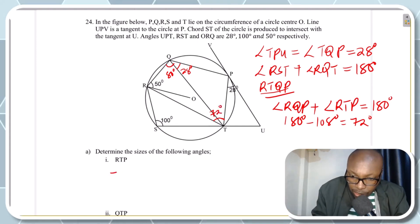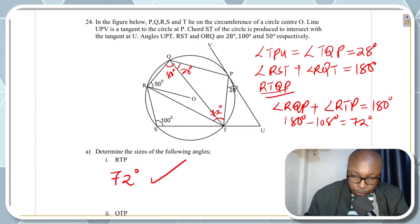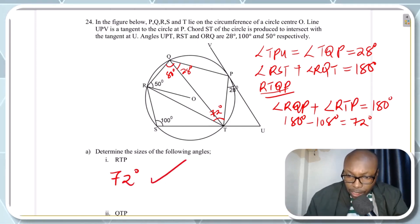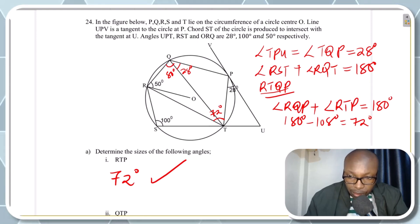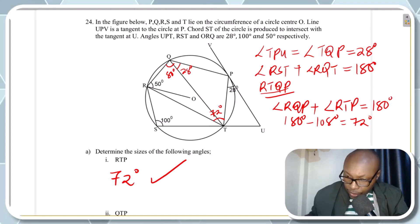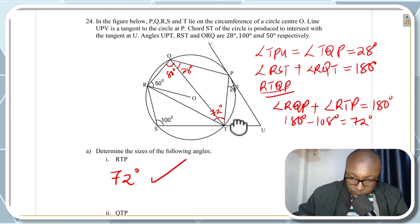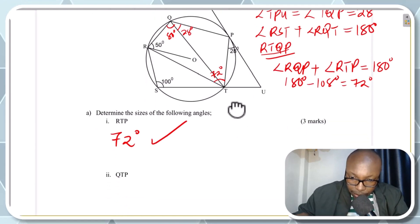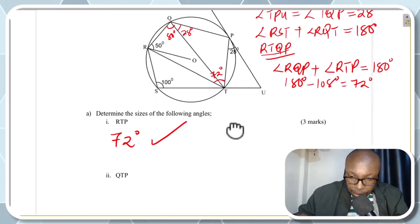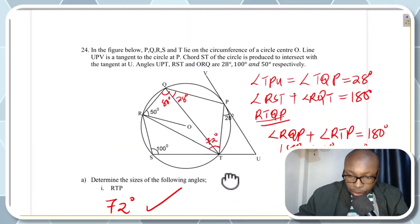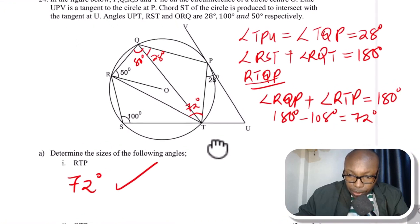So we have already obtained angle RTP as 72 degrees. If you are required to give the reason, the sum of two opposite angles in a cyclic quadrilateral is 180 degrees. The next question asks for angle QTP.